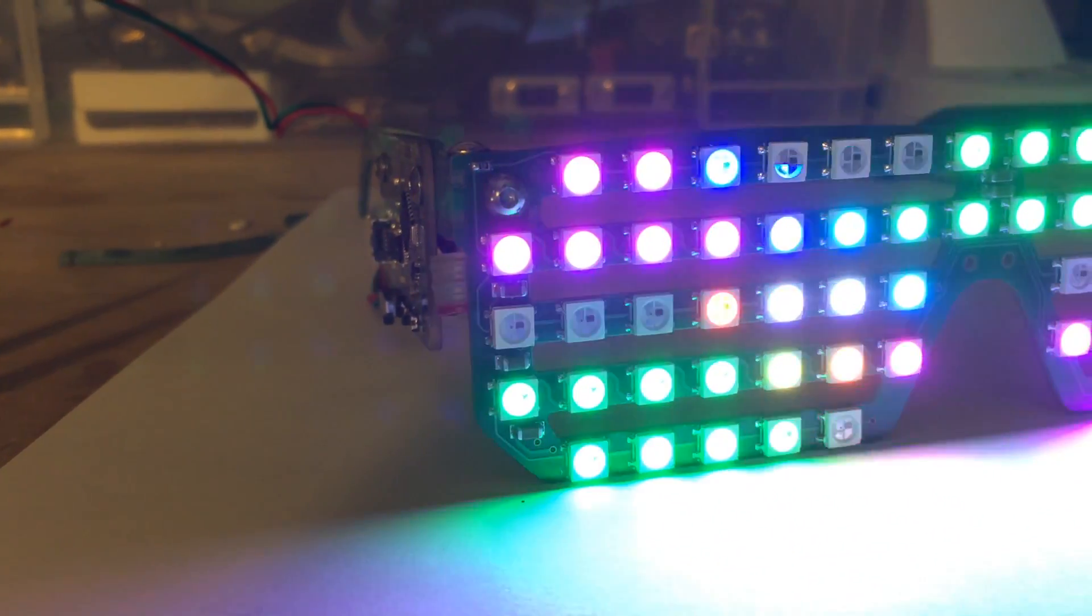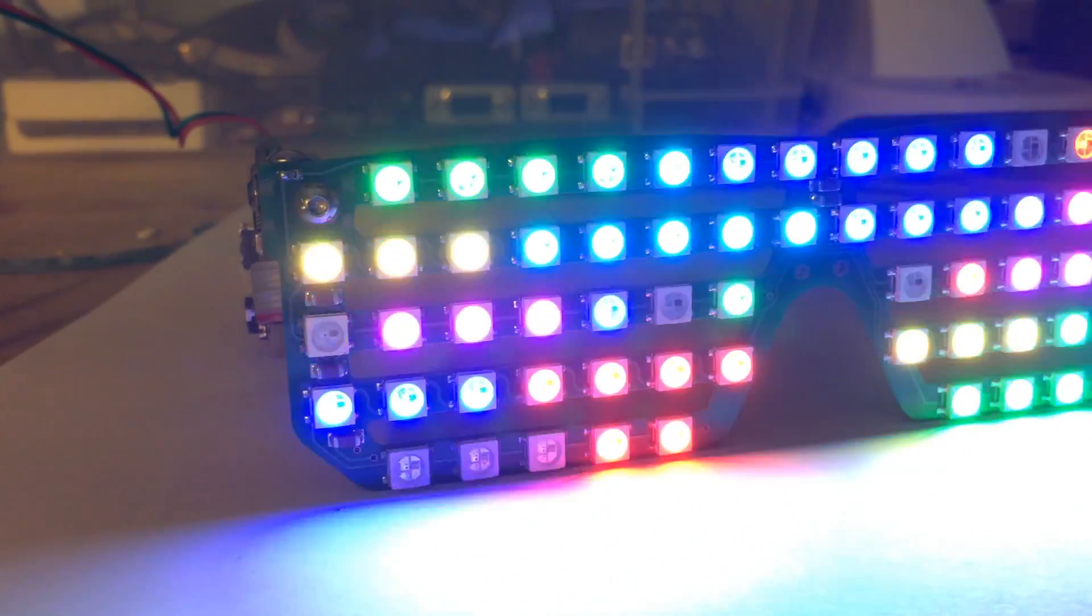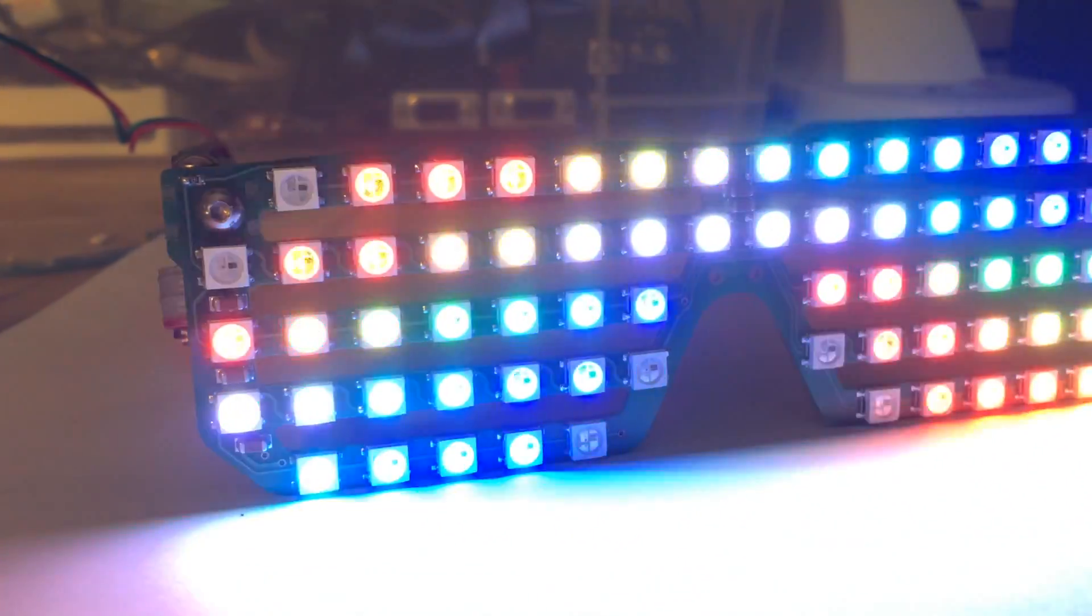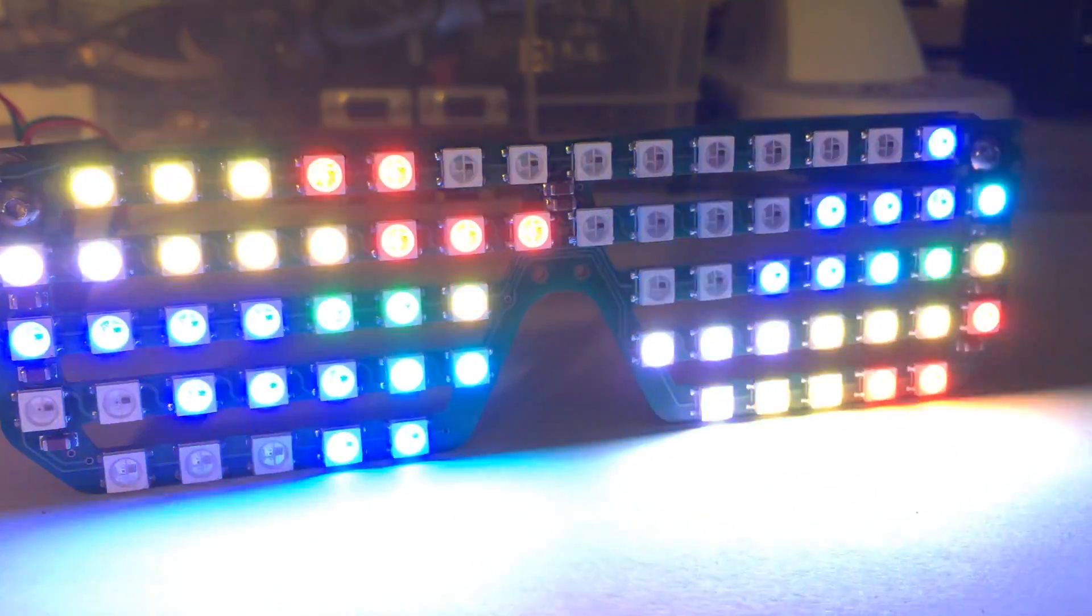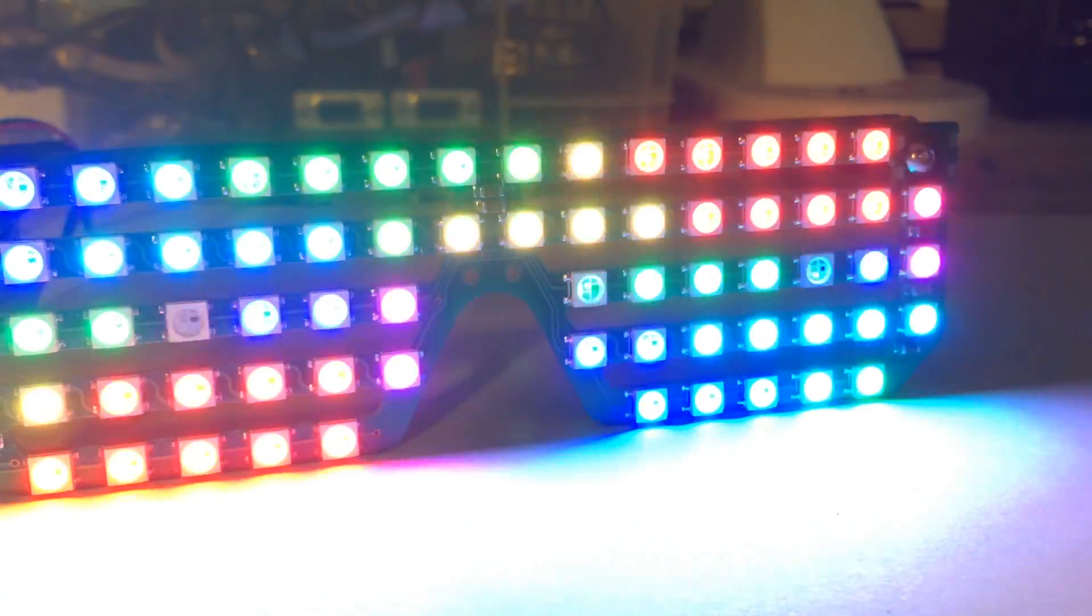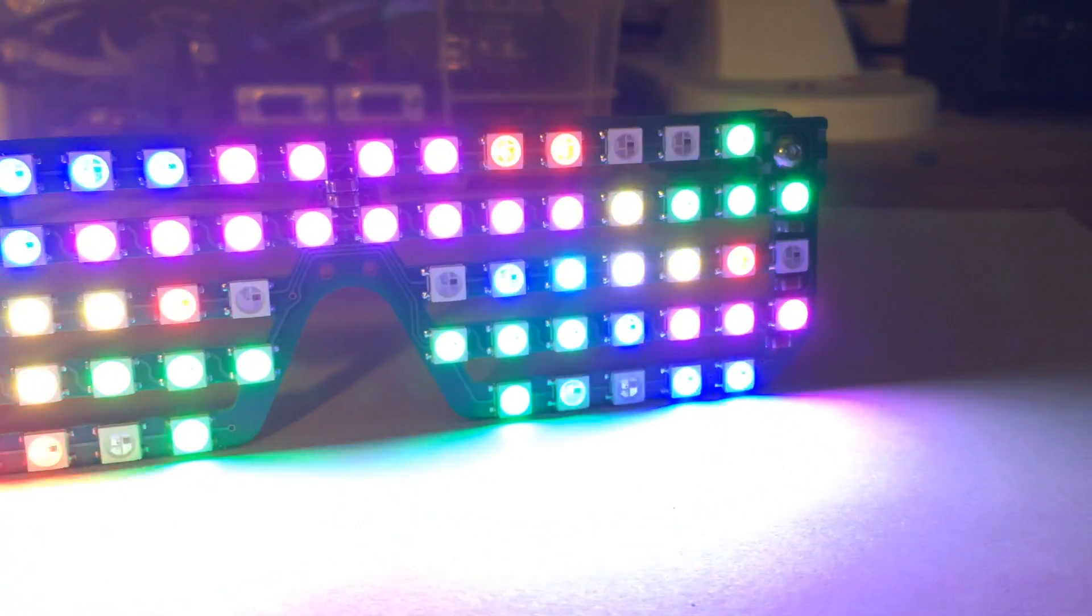On the front, we have 68 individually controllable pixels. They can display a wide range of colors and animations and are really bright. So bright that we usually set them five times dimmer than maximum, just to keep from blinding anybody nearby and to save some power.